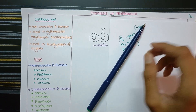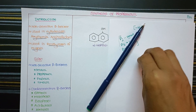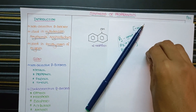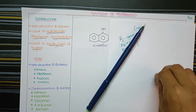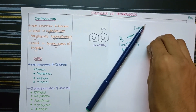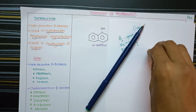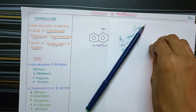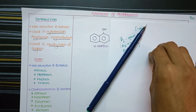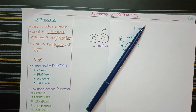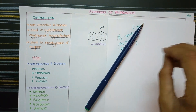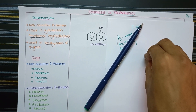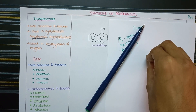Propranolol is used in the treatment of hypertension and arrhythmia. Arrhythmia is a condition in which the SA node and AV node — the primary and secondary pacemakers — generate irregular electrical impulses, leading to irregular heart contraction and relaxation. It is also used for chest pain. Propranolol acts as a non-selective beta receptor antagonist.